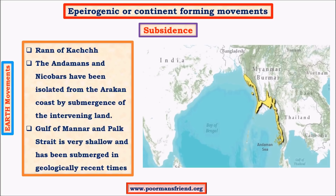Subsidence is the exact opposite of upliftment — movement towards the earth's center — and creates depressions on the earth's surface. Depressions filled with water form lakes, which are mainly formed due to subsidence. An example is the Andaman and Nicobar island chain, which is submerged under the sea. The Andaman and Nicobar islands are the extension of the Arakan coast (coastline of Myanmar), and this was a continuous landmass a few million years ago but parts are now submerged below sea waters.